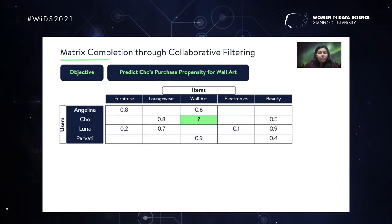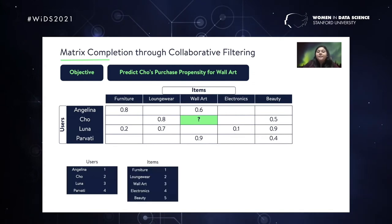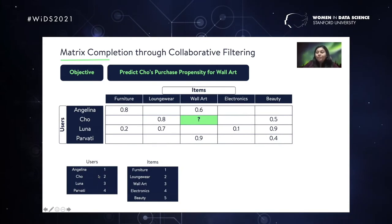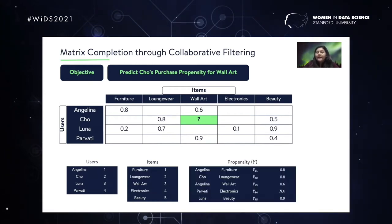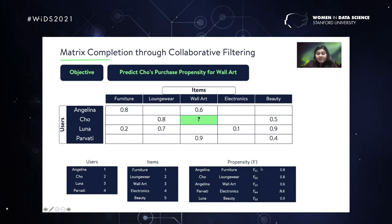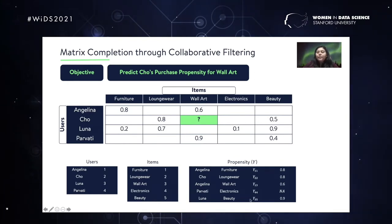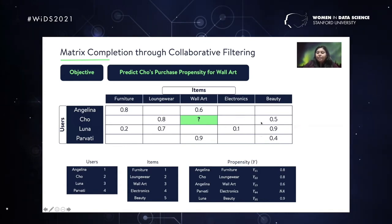Before going on, it's important to establish a few notations. We have four users — User 1, 2, 3, 4 — and five items — Item 1 through 5. The propensity Y displayed in each cell is denoted by Y_ij. So Y_11 means the propensity of User 1, that is Angelina, purchasing Item 1, that is furniture — in this case 0.8. Likewise, Y_35 is the propensity of User 3, Luna, purchasing Item 5, beauty — in this case 0.9.